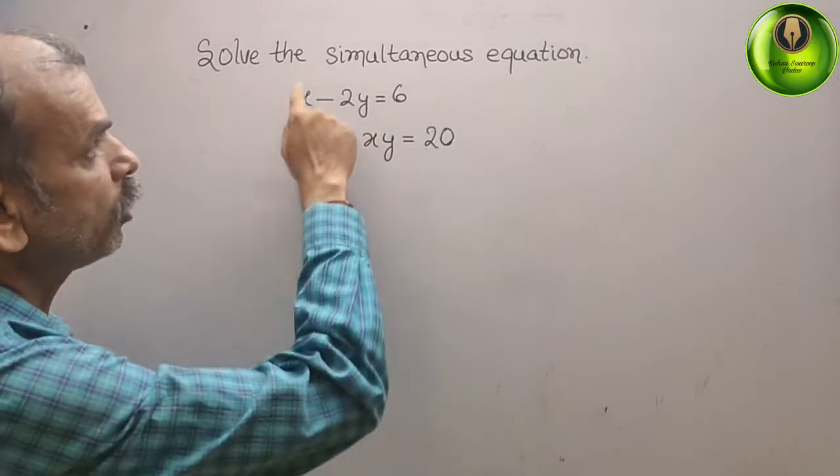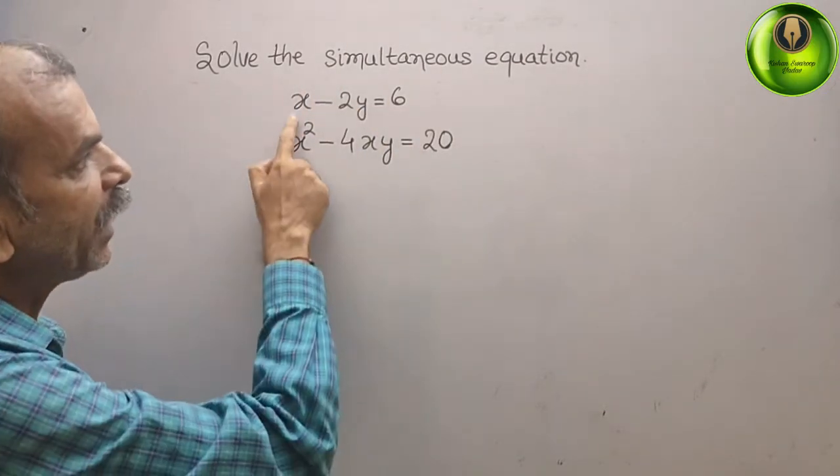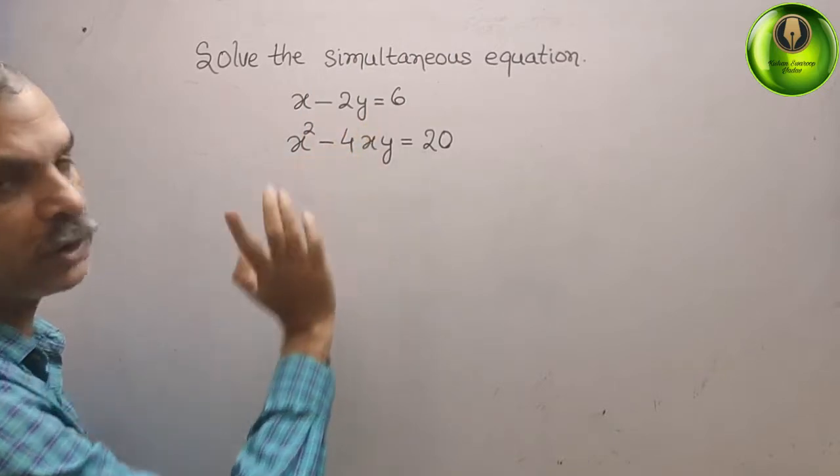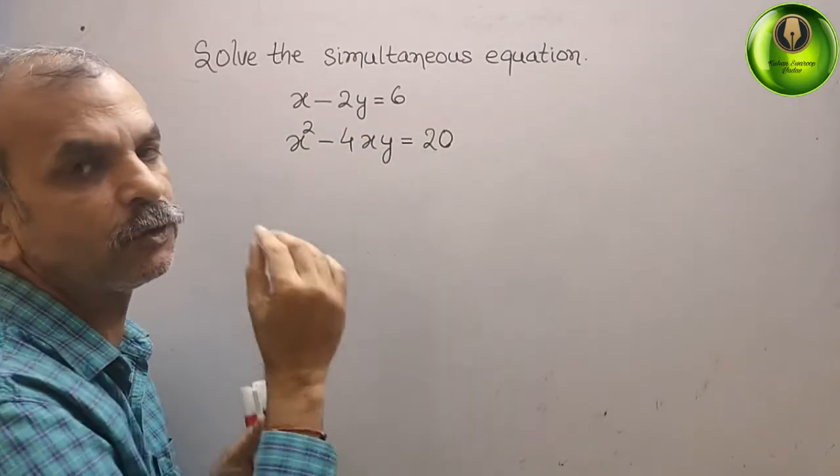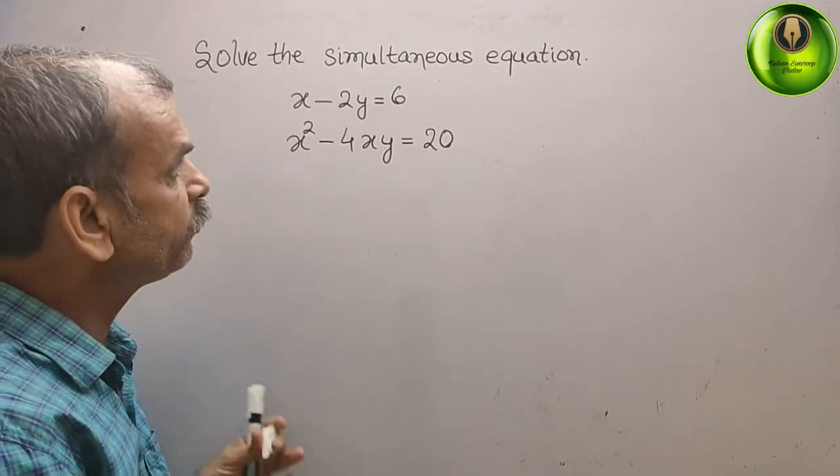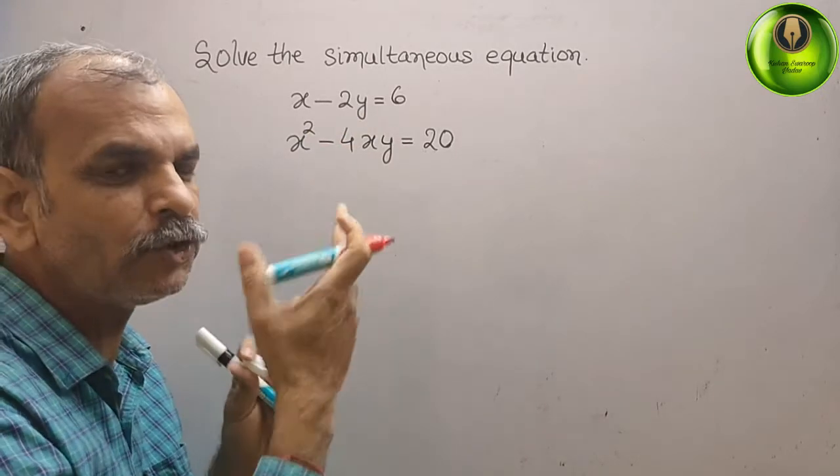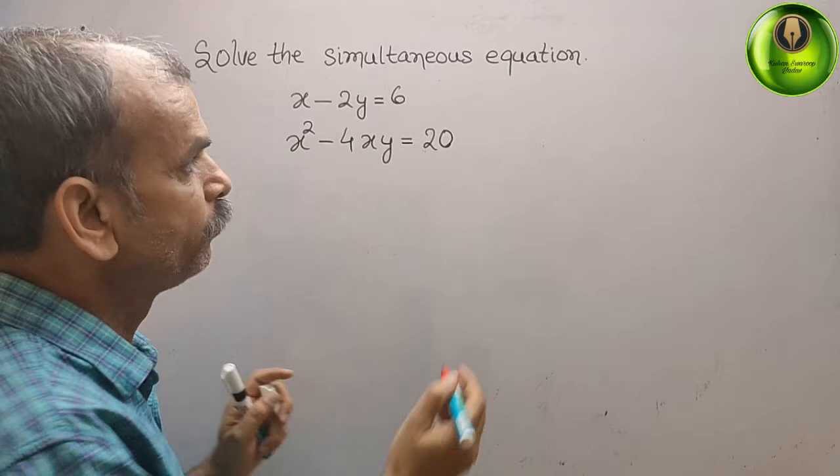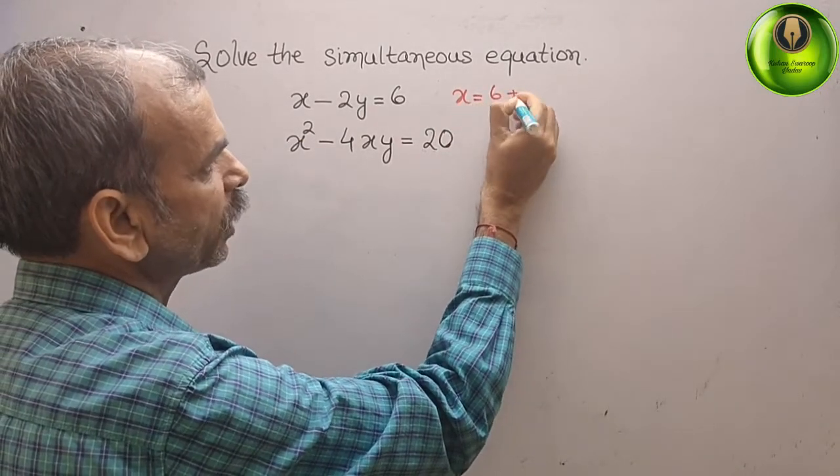Your question is solve the simultaneous equations. What they have given: x minus 2y is equal to 6, and second is x squared minus 4xy is equal to 20. What we have to do is in the first equation, find what is your x or what is your y. So we will take x only, so x is what? 6 plus 2y.